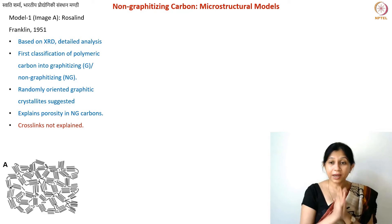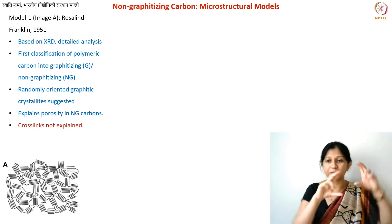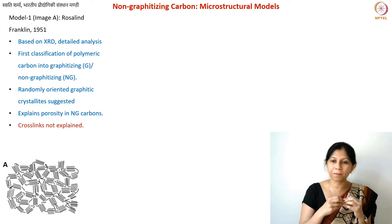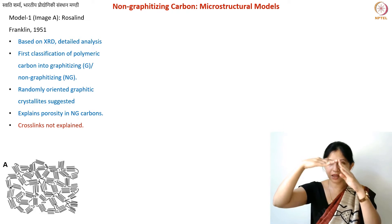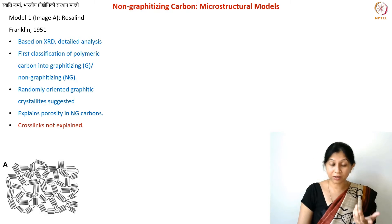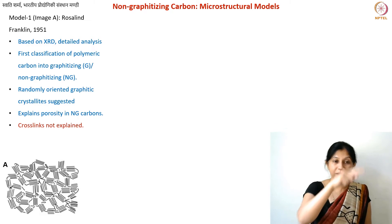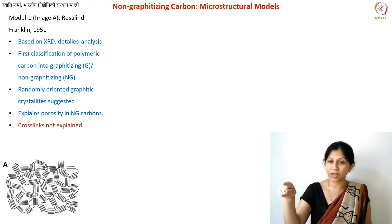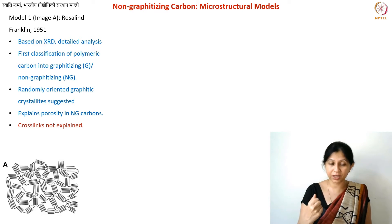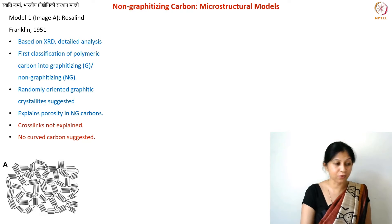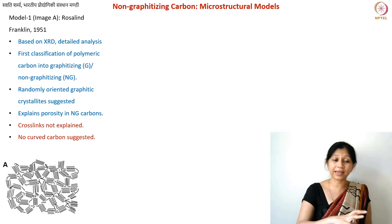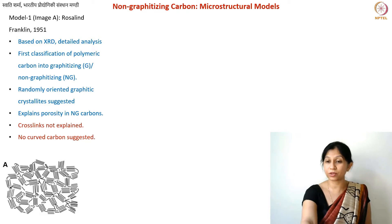You have one randomly oriented crystallite and another, but are they connected? Non-graphitizing carbons are electrically conductive — not as highly as graphite, but conductive. If they are conductive, there must be a path for electrons. If the links between crystallites are missing, you cannot explain good conductivity. Also, at that time there was no discussion on curved carbon structures — even fullerenes were discovered much later in the 1980s. Curved carbon structures were not explained by Franklin's model.